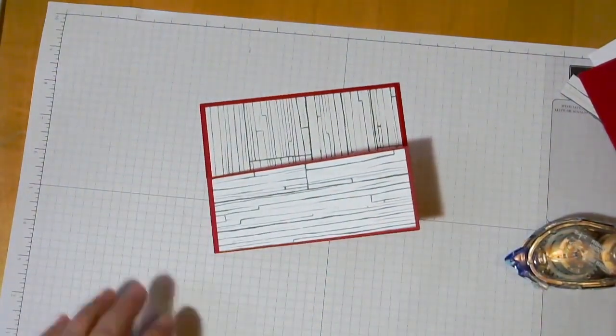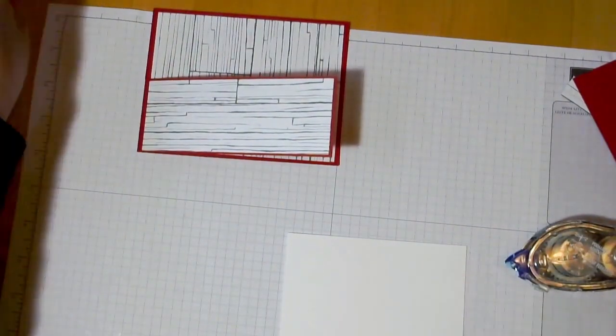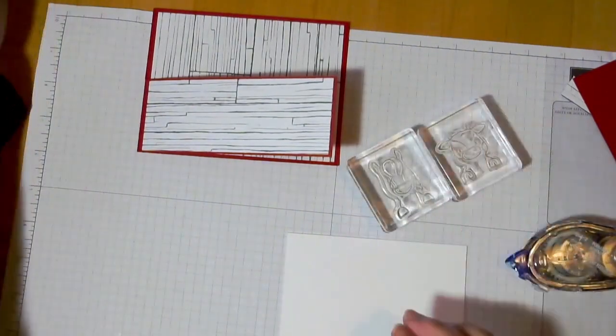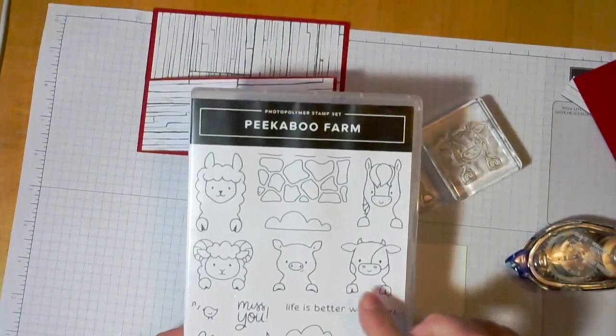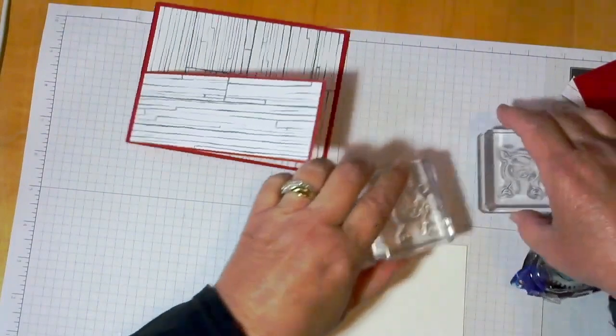Then we're going to stamp some little animals that are going to hang over the side. And we've got our barn animals. I'm using the Peekaboo Farm, which is a Stampin' Up! set. And there are actually 5 different animals. So you have kind of some options.